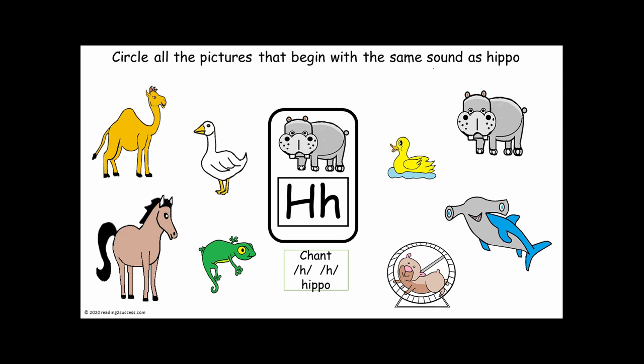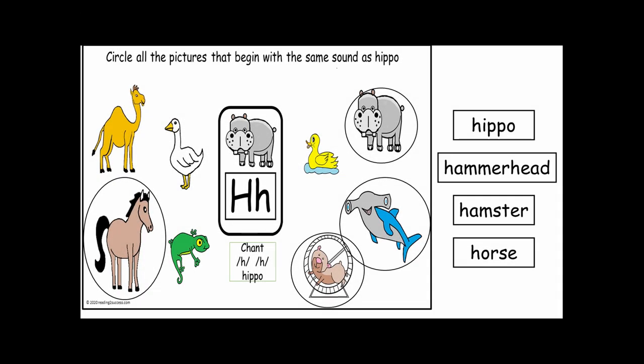This is our practice page where children circle all the pictures that begin with the same sound as Hippo. Hippo is our first one — see if they circle it. Then go on to D, D, Duck. And this is a Hammerhead: H, H, Hammerhead. Then we have a Hamster: H, H, Hamster. A Gecko: G, G, Gecko. A Horse: H, H, Horse. A Goose: G, G, Goose. And a Camel: C, C, Camel. The answers are Hippo, Hammerhead, Hamster, and Horse.